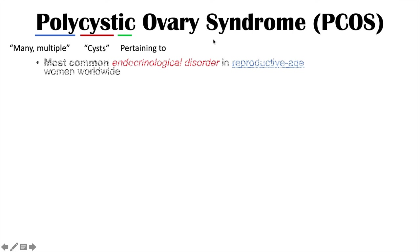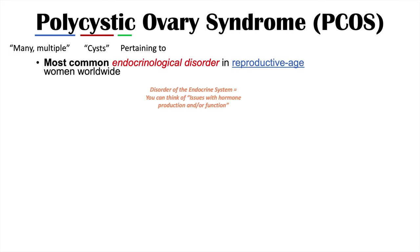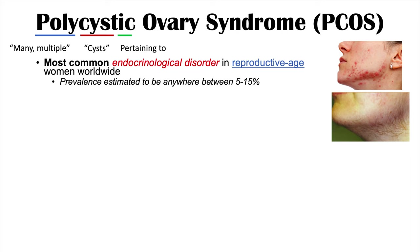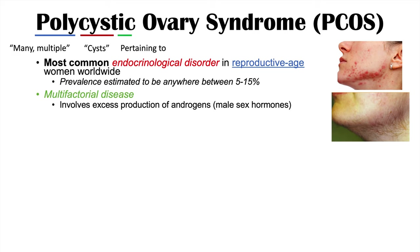It is actually the most common endocrinological disorder in reproductive age women worldwide, estimated to have a prevalence of anywhere from 5 to 15%. Oftentimes women are affected with acne and hirsutism, or excessive hair growth, in this condition. It is a multifactorial disease, but if we were to boil it down, this condition involves excess production of androgens or male sex hormones.